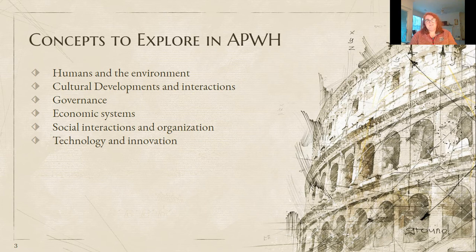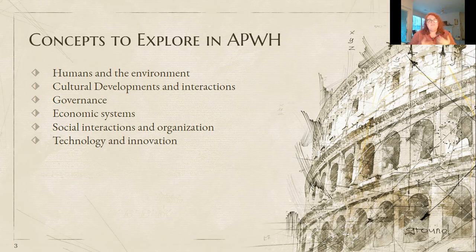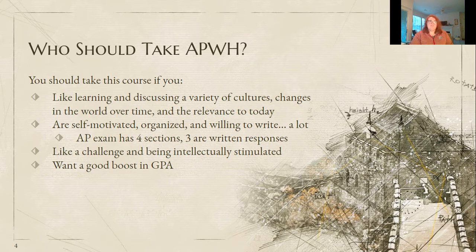We also look at the variety of economic systems in this class, dating back to the Middle Ages, and explore the changes there. We look at social interactions and how every society is organized, and we compare and explore how social interactions have changed, how our perceptions have changed, and how we need to continue to evolve when it comes to interacting with different societies and cultures. And then lastly is technology and innovation — this is a big piece because technology has changed drastically, even in the last 20 to 30 years, and we look at the impact of changes in technology since the 1200s.